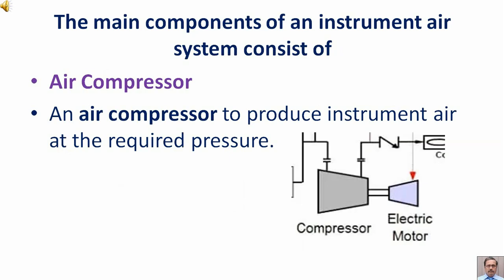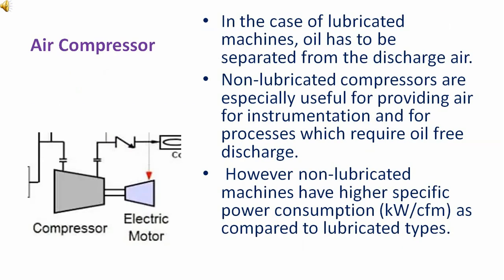Air compressor: An air compressor is required to produce instrument air at the required pressure. In the case of lubricated machines, oil has to be separated from the discharge air. Non-lubricated compressors are especially useful for providing air for instrumentation and for processes which require oil-free discharge. However, non-lubricated machines have higher specific power consumption compared to lubricated types.